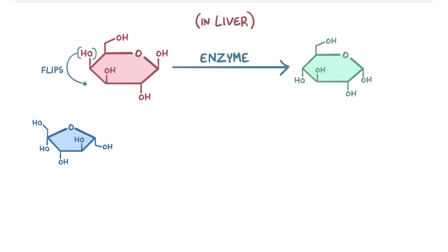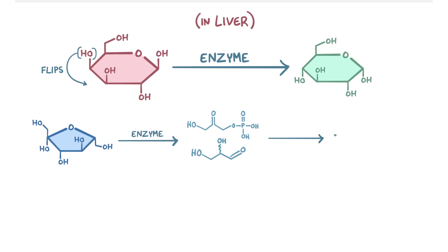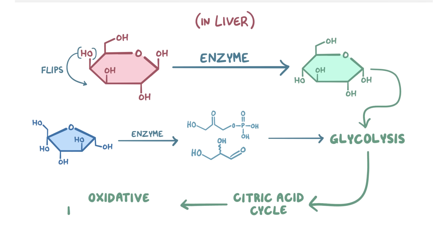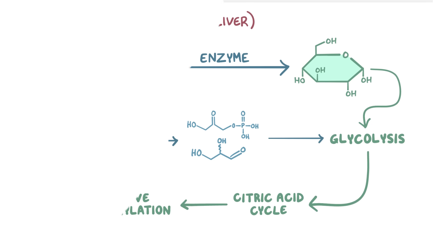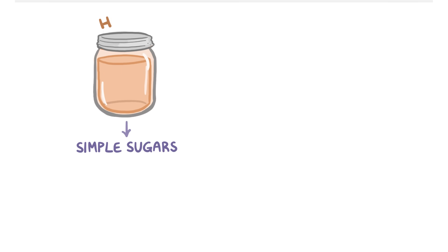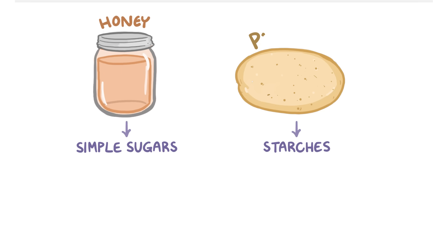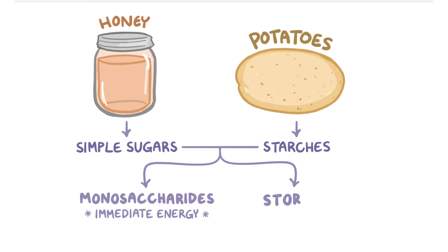Fructose is handled a bit differently by the liver. Fructose has a total of six carbons, and most of it is broken down into two three-carbon molecules and sent into glycolysis to help generate energy. When energy is needed, all three monosaccharides are metabolized through glycolysis, then the citric acid cycle, and oxidative phosphorylation. Ultimately, all digestible carbohydrates, regardless of whether they come from simple sugars in honey or from starches in baked potatoes, are broken down into their component monosaccharides for immediate energy use or stored away for a rainy day, depending on what the body needs.